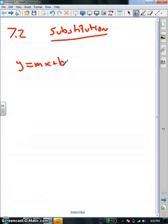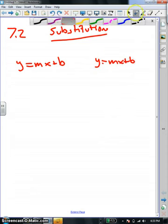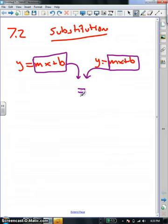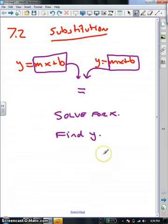Well, the substitution method says take one equation in y equals mx plus b, take a second equation in y equals mx plus b, and the trick here is that you take the mx plus b parts and set those equal to each other. After you set them equal, you solve for x, and then you find y.